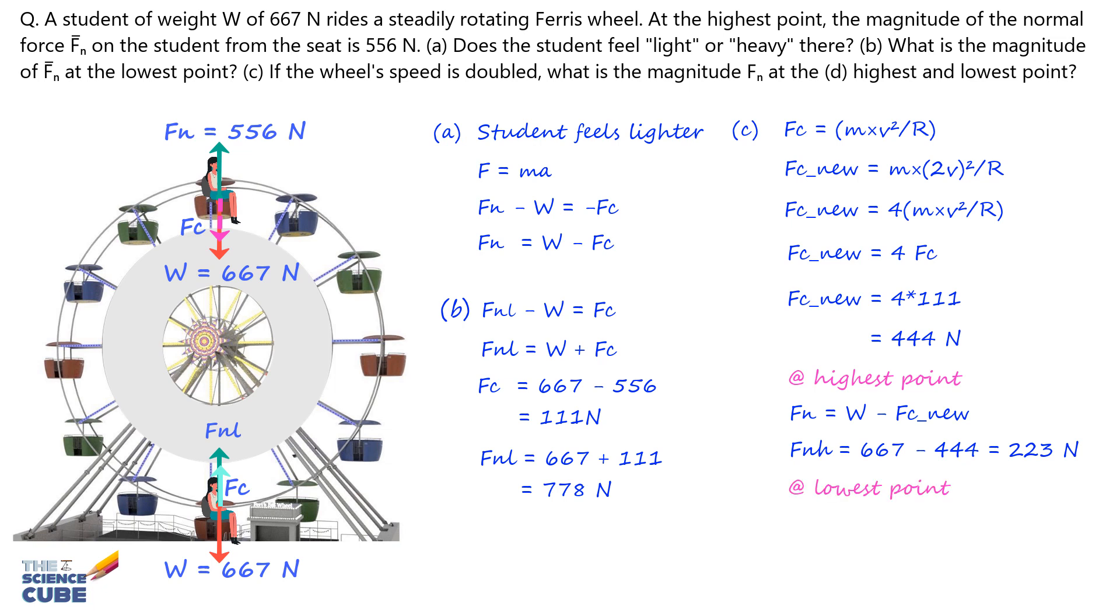And at the lowest point, Fn equals W plus Fc new, which equals 667 Newtons plus 444 Newtons, that equals 1111 Newtons.